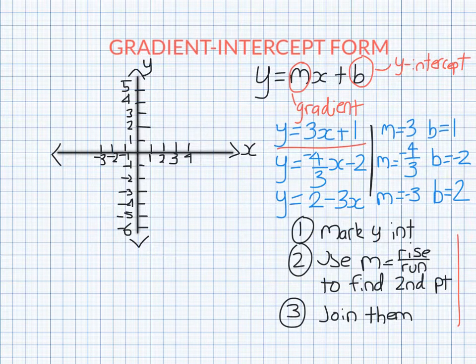Let's first graph y equals 3x plus 1 using these steps here. So we know the y intercept is 1 so we mark that. Now the gradient is 3. So gradient of 3 is of course the same as 3 over 1.